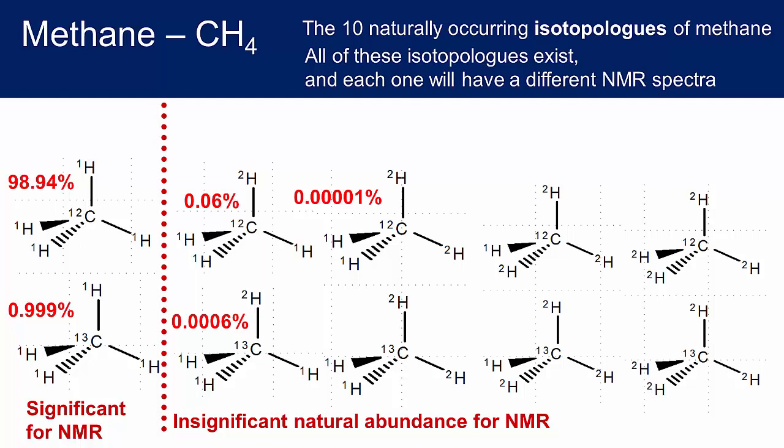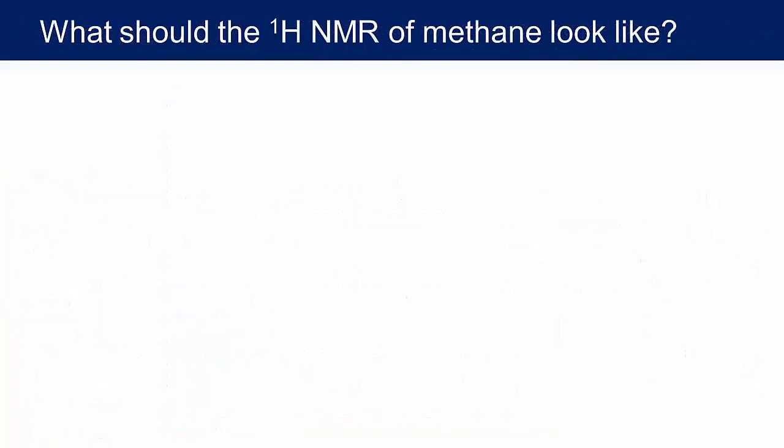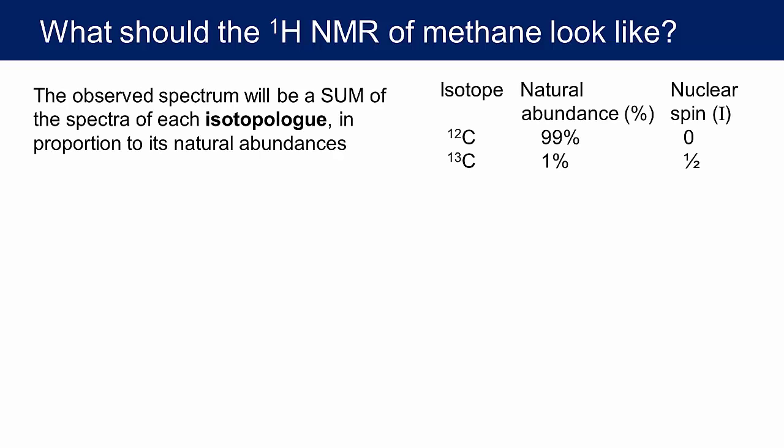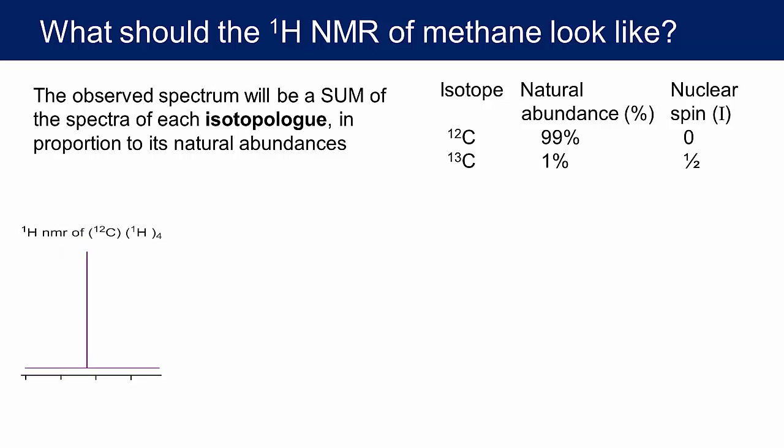Now let's consider the proton NMR spectrum of our sample of methane. Each isotopologue that contains a proton will give an NMR signal, and the spectrum we observe will be a superposition of all the spectra of each isotopologue weighted by its abundance. The first and most abundant isotopologue has one carbon-12 atom and four protium atoms, making up the bulk of the sample. The tetrahedral geometry ensures all hydrogens are in the same chemical environment, and we expect a single signal — a singlet, since atoms in the same environment don't couple to each other and carbon-12 has no nuclear spin moment.